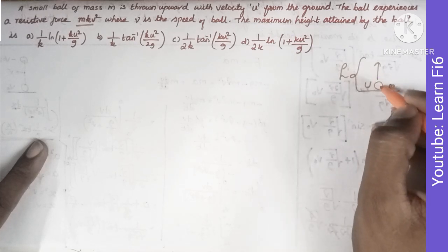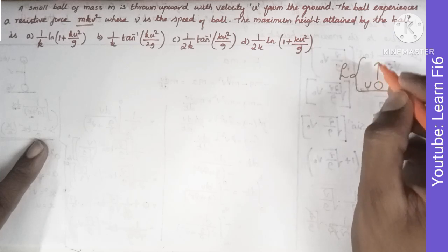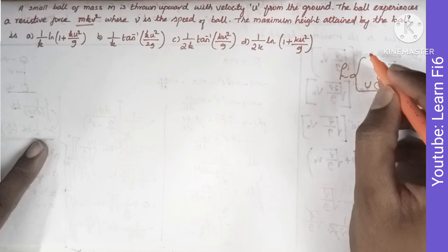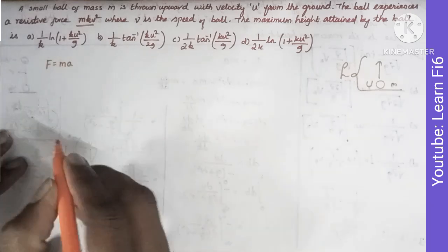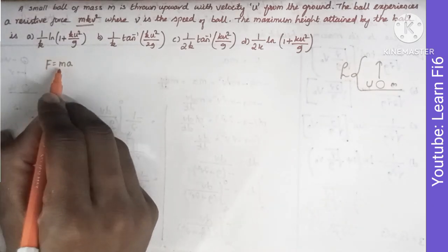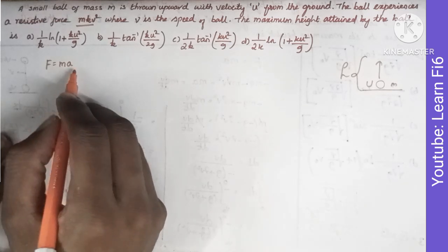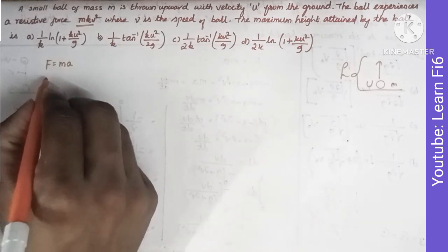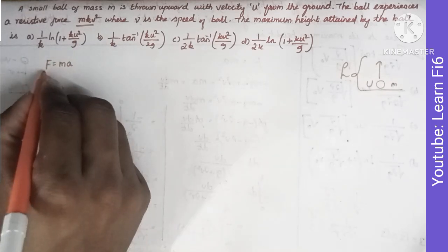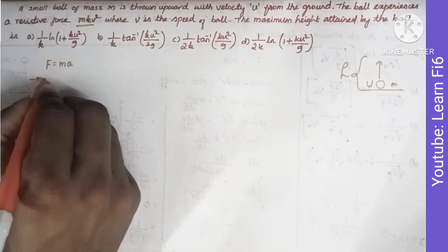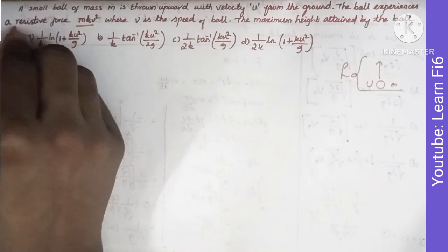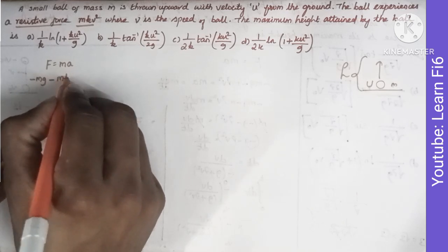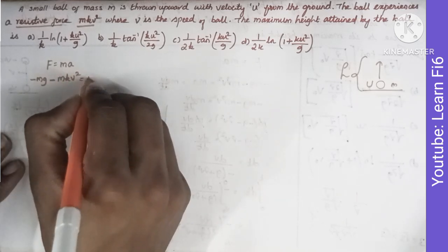The ball moves upward to a maximum height, then stops and starts moving downward. We apply Newton's second law: the net force equals mass times acceleration. The forces acting on the ball are gravity, minus mg (opposing motion), and the resistive force, also with a negative sign, giving: minus mg minus mkv² equals m times dv/dt.